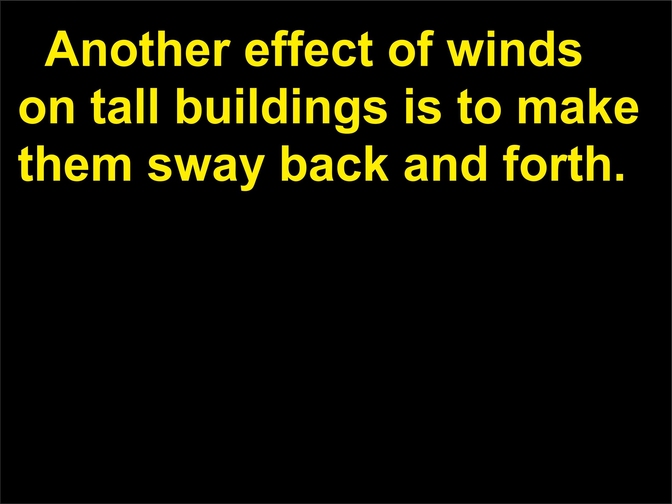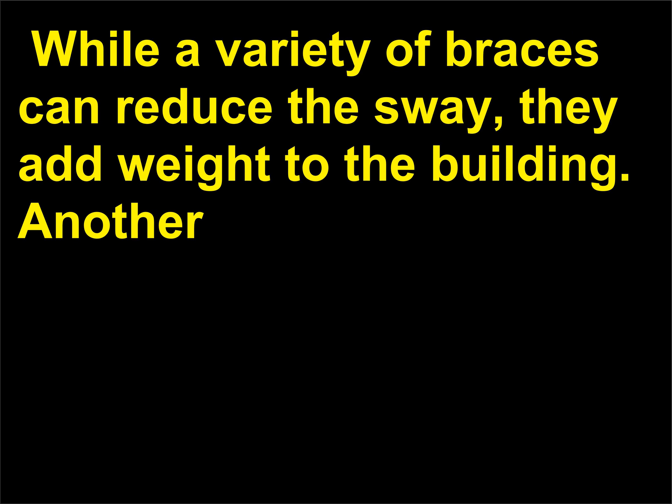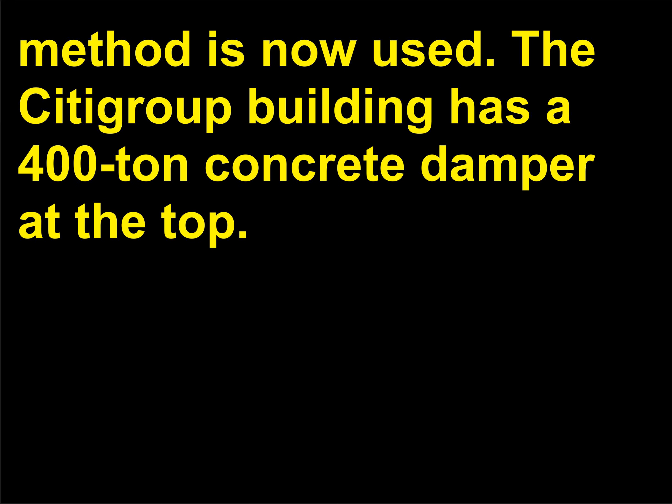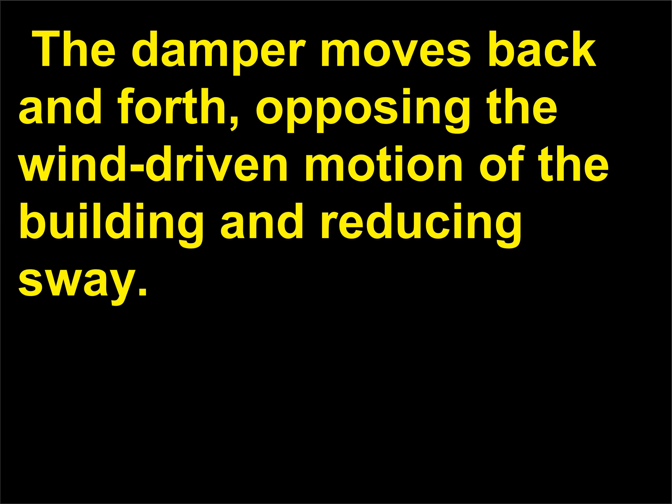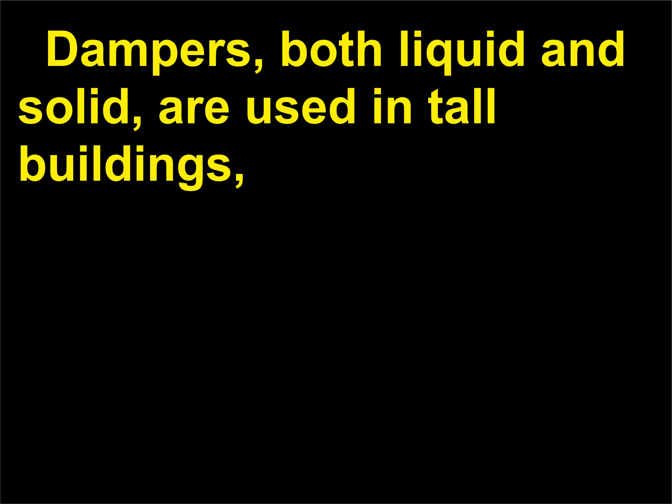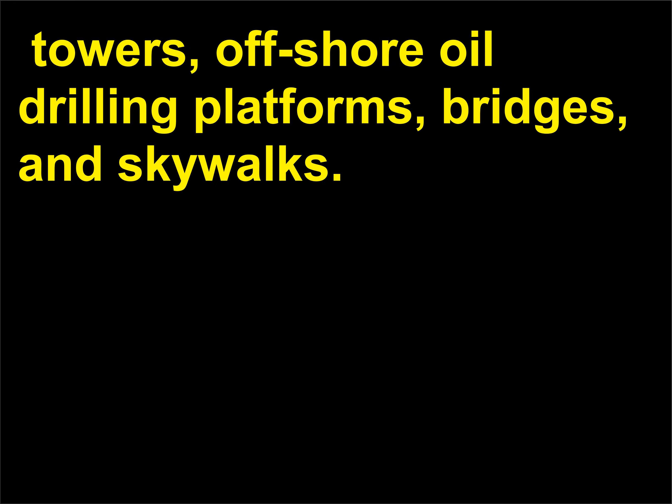Another effect of winds on tall buildings is to make them sway back and forth. While a variety of braces can reduce the sway, they add weight to the building. Another method is now used: the Citigroup Building has a 400-ton concrete damper at the top. The damper moves back and forth, opposing the wind-driven motion of the building and reducing sway. Dampers, both liquid and solid, are used in tall buildings, towers, offshore oil-drilling platforms, bridges, and skywalks.